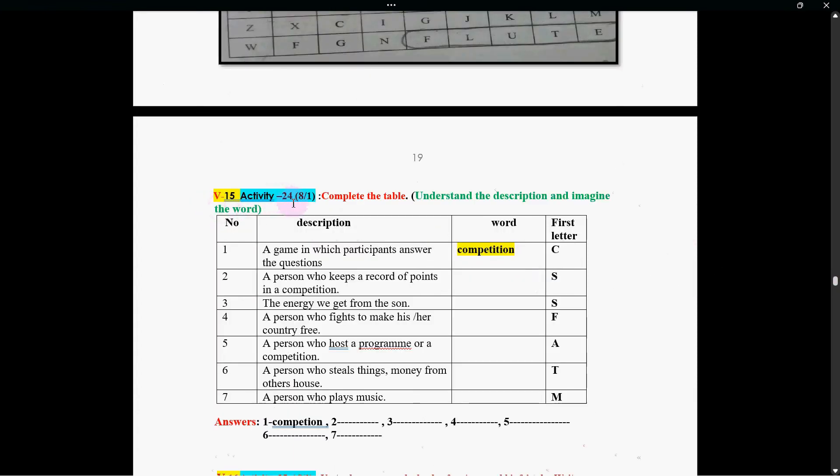Friends, this is activity number 24. Complete the table. One table is given. These are the numbers of the statements. Here, this is description.